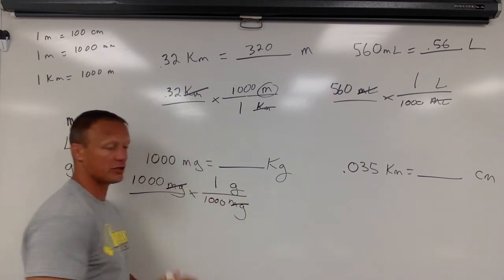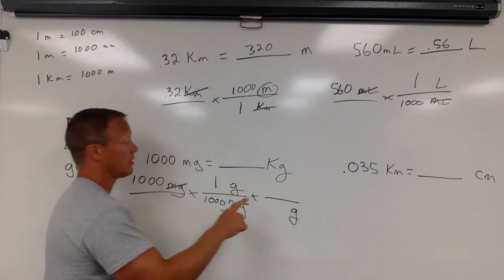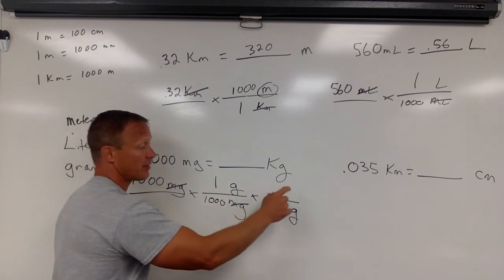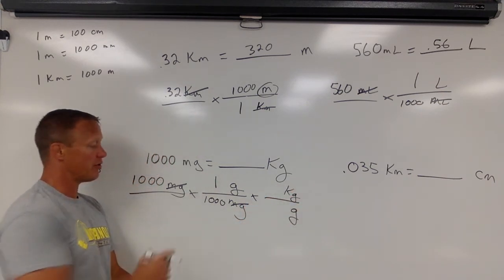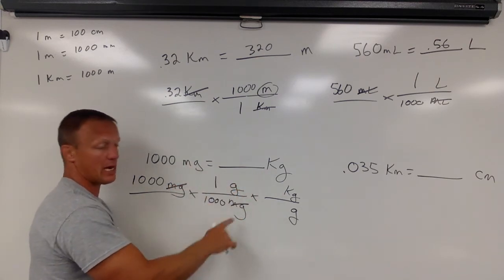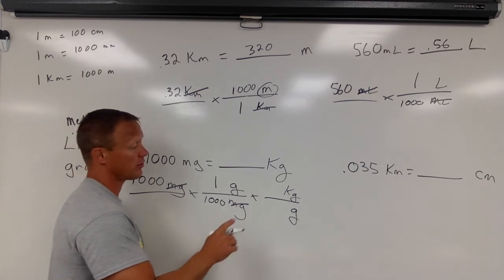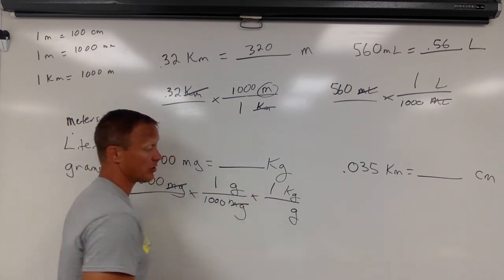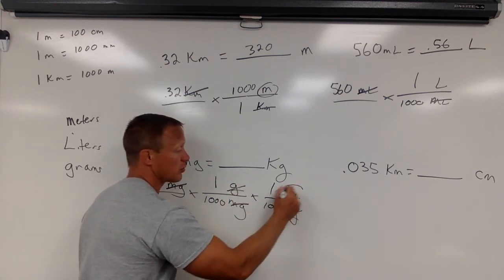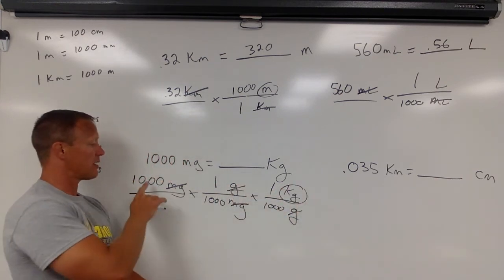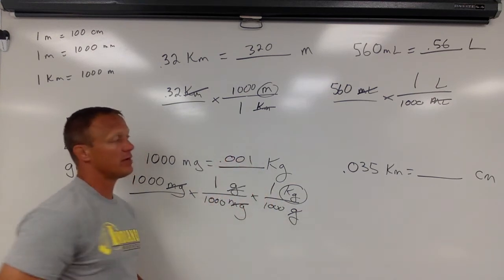Milligrams cancel because they're on top and bottom of the fraction. Label over here needs to be grams. Now I'm going from the base unit from grams to kilograms. If you knew directly how many milligrams in a kilogram, you could have put that in here. Not something most of us know. You should know the base unit to the other ones. In this case, a kilogram, which is big, contains 1,000 little grams. That cancels. We're left with kilograms. We're taking 1,000 times 1 times 1 divided by 1,000 divided by 1,000.